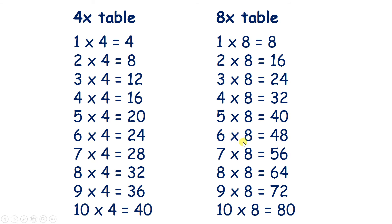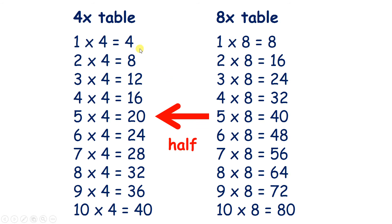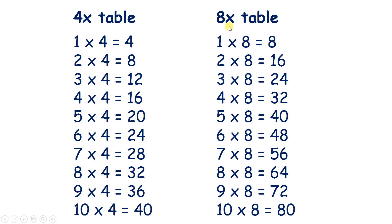And if we have our 8 times table, we can halve it to get our 4 times table. And remember, halving is the same as dividing by 2. So half of 8 is 4, because 8 divided by 2 is 4. And notice that numbers in the 8 times table are always also in the 4 times table, so we can say that multiples of 8 are always also multiples of 4.